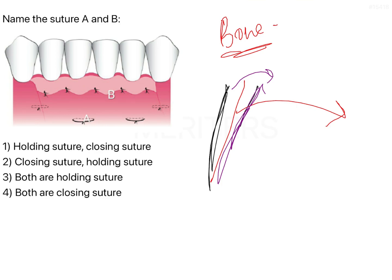Clinically when you are actually trying to reflect the flap, there are instances where the mucosa is separated from the periosteum. So you have the bone, the periosteum, and the mucosa coming out as two or three different layers.